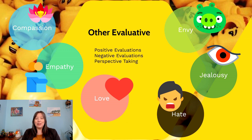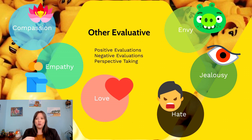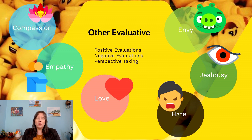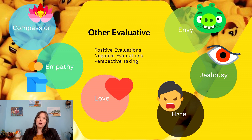Finally for other-evaluative emotions, we need to discuss hate. For this course, hate is defined as the dehumanization of another individual — a strong dislike to the point that you view someone as not equal to you. This involves calling someone a monster, demon, or evil in a way that strips away their humanity, which then makes a person willing to tolerate or commit acts of atrocity against them. Hate is essentially dehumanizing dislike directed at a group or individual.